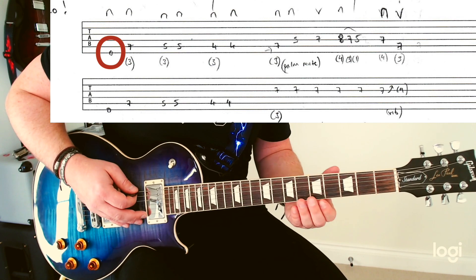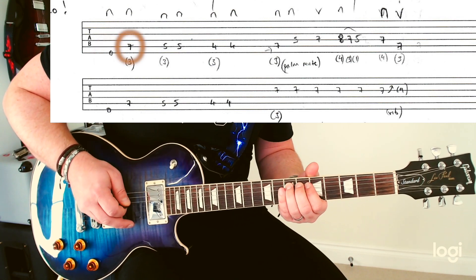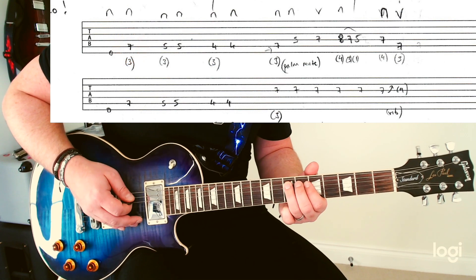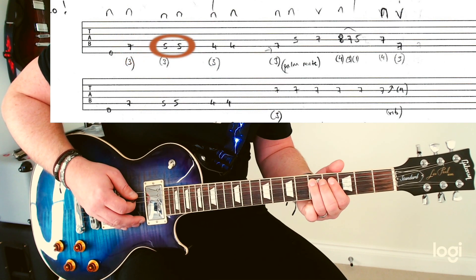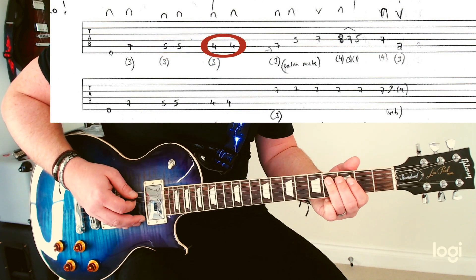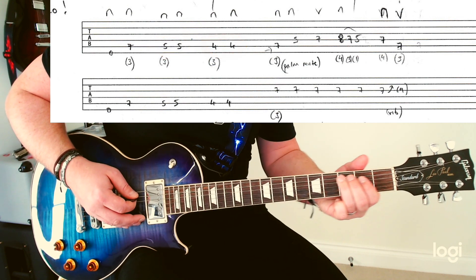So open string on the E. Jump up an octave with your 3rd finger to that 7th fret. I just use the same finger here to slide it down because it makes sense later on. All down picks. Then you're going to slide up to the 7th.